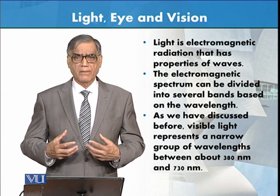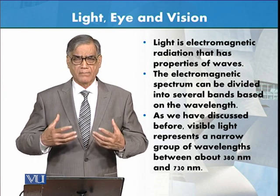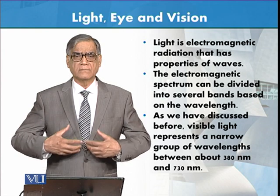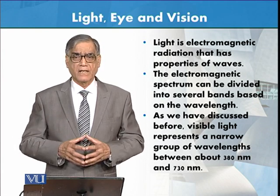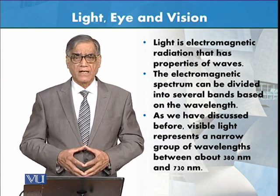As we have discussed before, visible light represents a narrow group of wavelengths, between about 380 nm to 730 nanometers. We have also discussed this, but let's recall it — what is a nanometer?